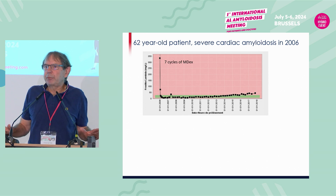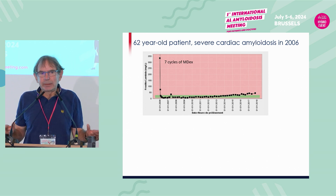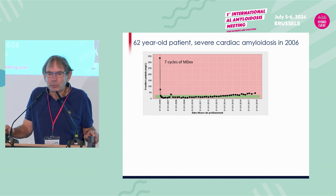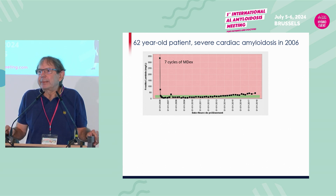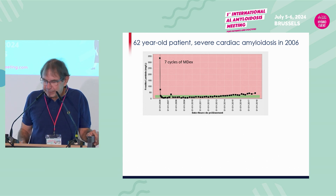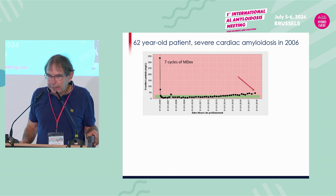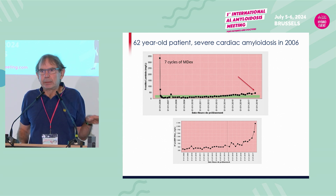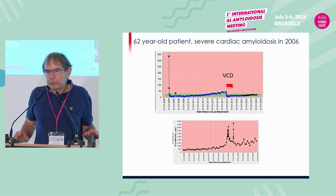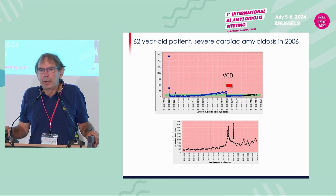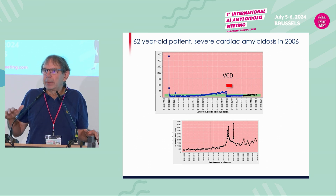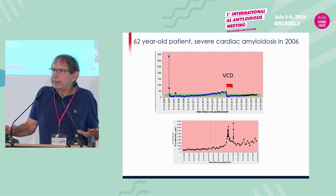Here is an example of a 62-year-old patient treated in 2006 with MDex who had a very severe cardiac disease. Sometimes — maybe in 25% of patients with MDex — you have this kind of response: complete response at the first cycle and 11 years of complete response. Then there was a slight increase in free light chain and relapse of her cardiac amyloidosis, with NT-proBNP rising rapidly. She was treated with VCD, achieved a new complete response, and is in complete response six years later. But the NT-proBNP did not drop to where it was before the relapse.